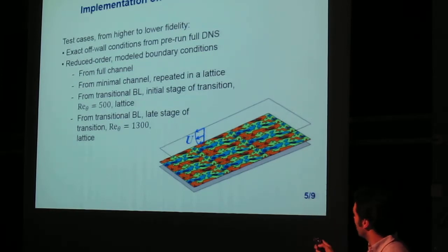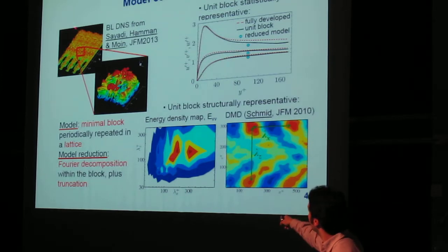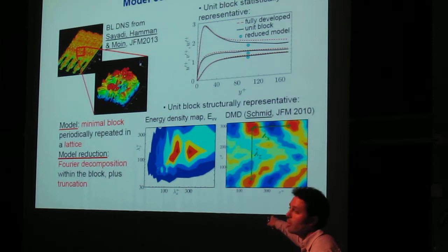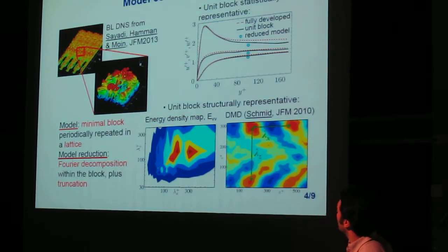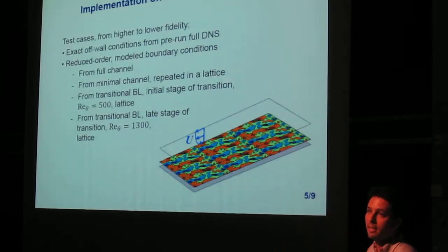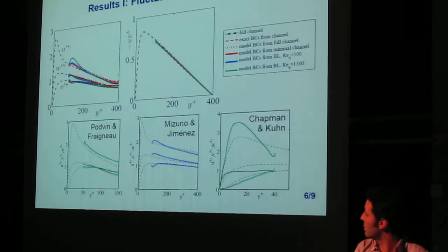And then eventually impose these transitional minimal units as boundary conditions. We tried two. We tried one in the very early stages of transition, where things are beginning to develop, and something more towards fully developed state, where things have lost coherence and it looks much more like a channel. So we ran all these cases to compare how things would change by using different kinds of minimal units.